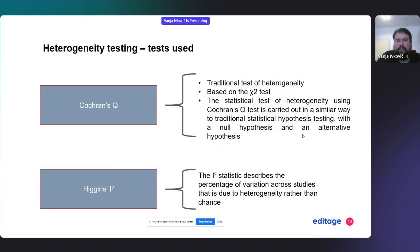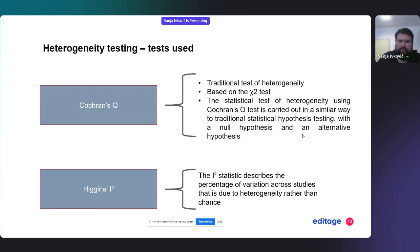Cochrane Q and Higgins I-squared are two key statistics for assessing heterogeneity. Both are based on the Chi-squared test, which you probably know well from your research. The I-squared statistic describes the percentage of variation across studies that is due to heterogeneity rather than chance. I will explain it on the next slides.